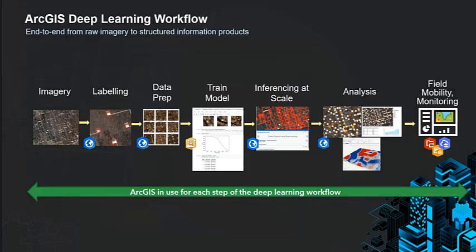The ArcGIS API for Python can apply image augmentation to your data, either using intelligent defaults or transformations that you specify. Model training can then be done within ArcGIS Pro or the Python API, and we give you a lot of canned models to choose from, but you also have the option to integrate your own models through a simple raster function. For inferencing — often the performance bottleneck for many clients — we support inferencing at scale through image and raster analysis servers, enabling advanced analytics on top of deep learning results. These results can be visualized in dashboards, web apps, and field apps.